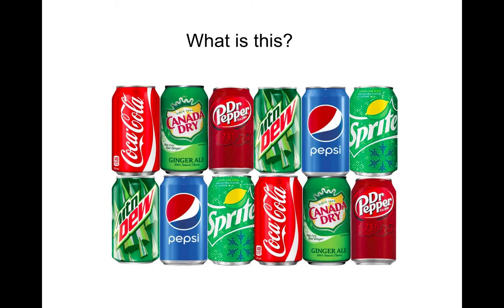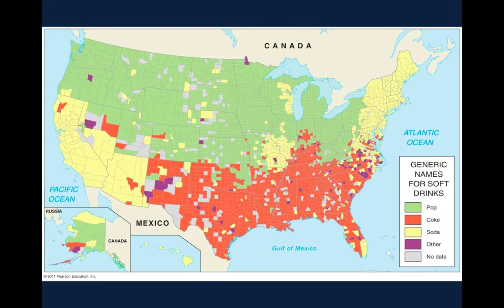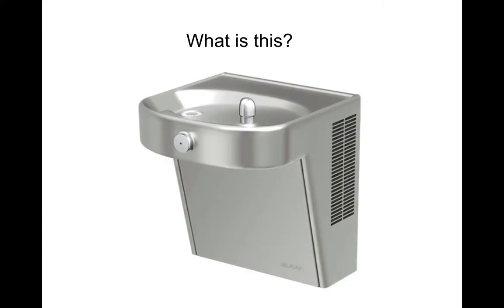If we were sitting in class right now, we'd be having a little fun with some of those pictures — what are those things called again? Soda, pop, or coke. According to the map, everyone in Summit County should be calling it 'pop.' And what about that thing you drink from — a water fountain or a drinking fountain? A water fountain is what you see in a park; a drinking fountain is what you drink out of. And if you're from Wisconsin, it's a bubbler.